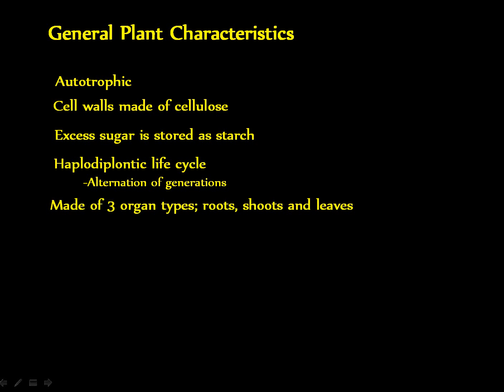Plants are made of three organ types: the roots, shoots, and leaves. Tissues develop from meristems, which are areas on a plant that cause growth. The type of growth is dependent on the type of meristem — for instance, we can have lateral meristems or apical meristems.